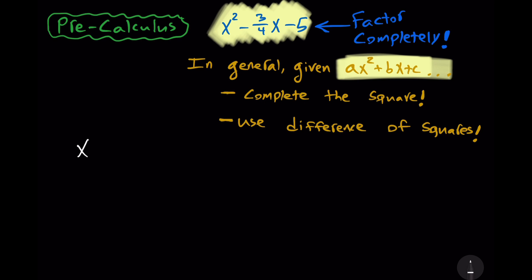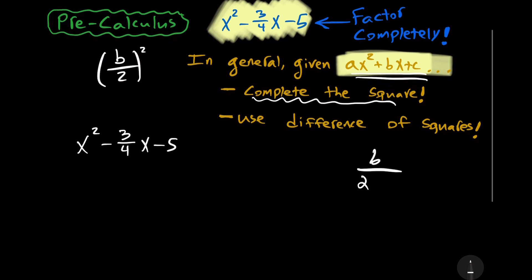So, we have x squared minus 3 fourths x minus 5, and we want to factor that completely. So, the first thing we're going to do is complete the square. Remember that completing the square makes use of b over 2 quantity squared. Or, if we're in this expression here, ax squared plus bx plus c, it would be b over 2a quantity squared. So, in this case, the b is this minus 3 fourths.